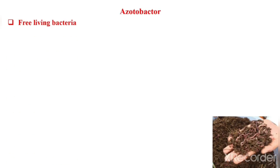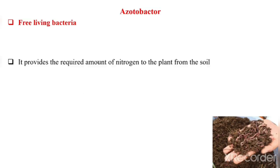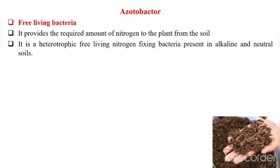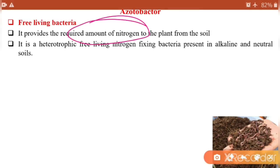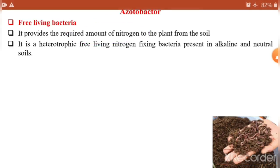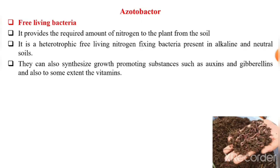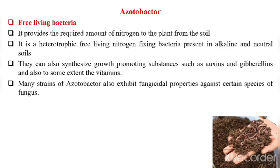The next type is Azotobacter. It is a free-living bacteria — not a symbiotic fixer. It provides the required amount of nitrogen to the plant from the soil. It is a heterotrophic, free-living nitrogen-fixing bacteria present in alkaline and neutral soils. Azotobacter can also synthesize growth-promoting substances such as auxins, gibberellins, and vitamins. Many strains also exhibit fungicidal properties against certain species of fungi.